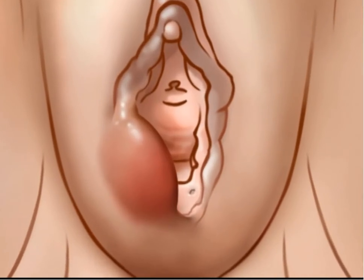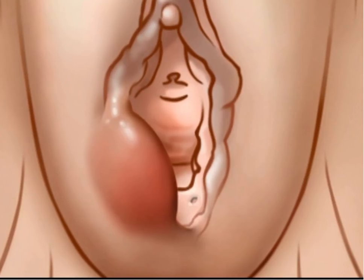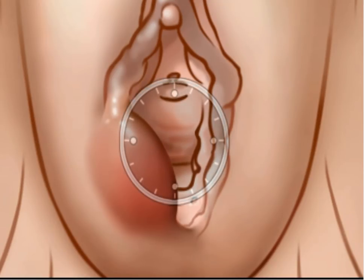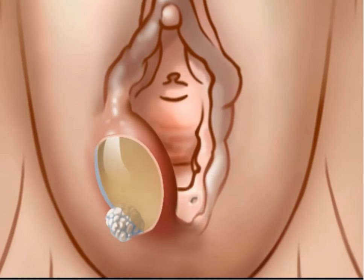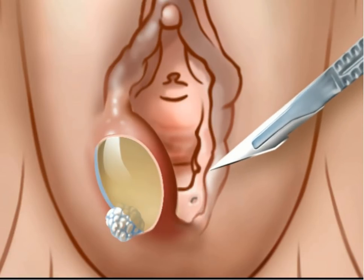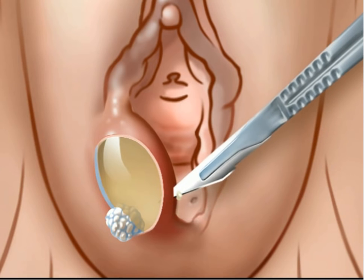The incision should be made along the inner surface of the cyst or abscess. It should be placed just outside and parallel to the hymenal ring at 5 or 7 o'clock on the vaginal opening. This position mimics the normal anatomy of the gland duct opening and avoids creation of a fistulous tract to the outer surface of the labia majora. A 1 cm incision is made using a scalpel with a number 11 blade, which pierces the skin and underlying cyst or abscess.